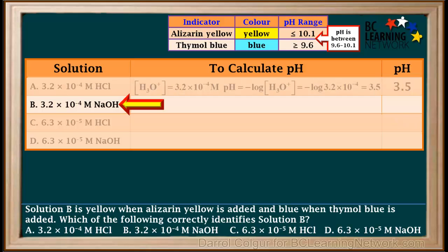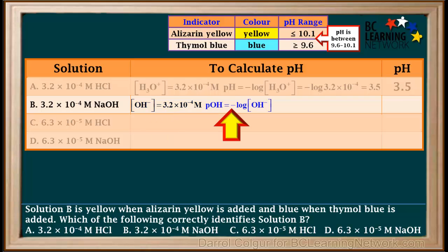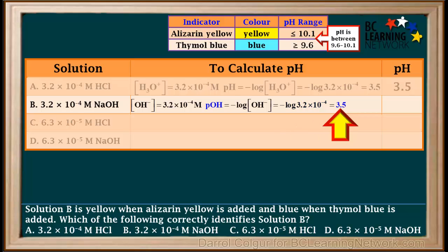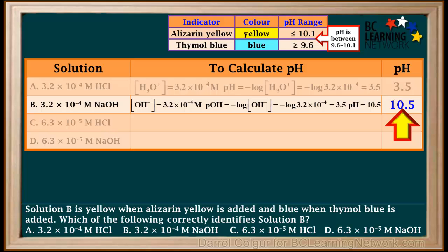Now we'll find the pH of the second solution, 3.2 times 10 to the negative fourth molar NaOH. Because NaOH is a strong base, the concentration of OH⁻ is equal to the concentration of NaOH, which is 3.2 times 10 to the negative fourth molar. pOH is the negative log of the hydroxide ion concentration, so the pOH expressed to one decimal place is 3.5. The pH is 14 minus the pOH, or 14 minus 3.5, which comes out to 10.5.